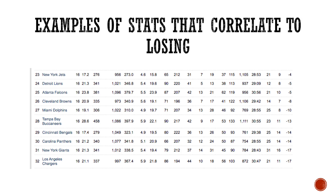To further validate a stat, look at the bottom teams and see if it correlates to losing. The Jets had a minus 4 turnover margin, and the Los Angeles Chargers were worst in the NFL at minus 17. Calling out the bottom teams — Jets, Detroit, Atlanta, Cleveland, Miami, Tampa, Cincinnati, Carolina, Giants, LA Chargers — zero of those teams made the playoffs. Turnover margin is a legitimate stat for finding a winning correlation in the NFL.